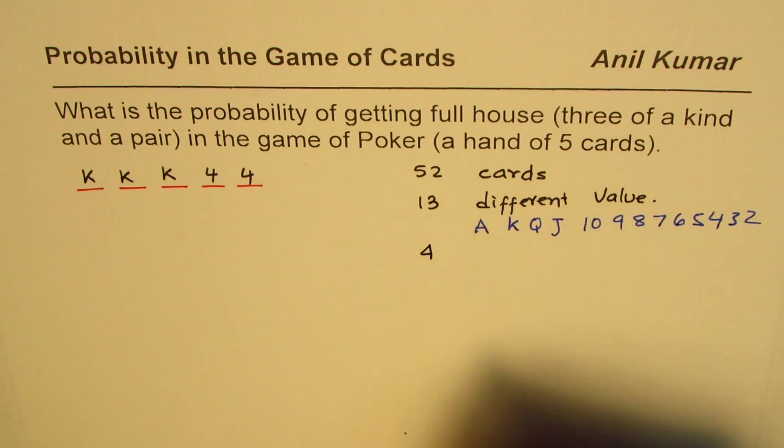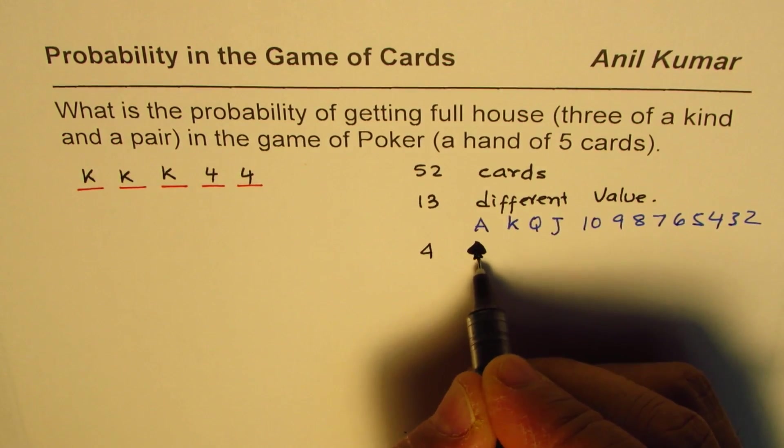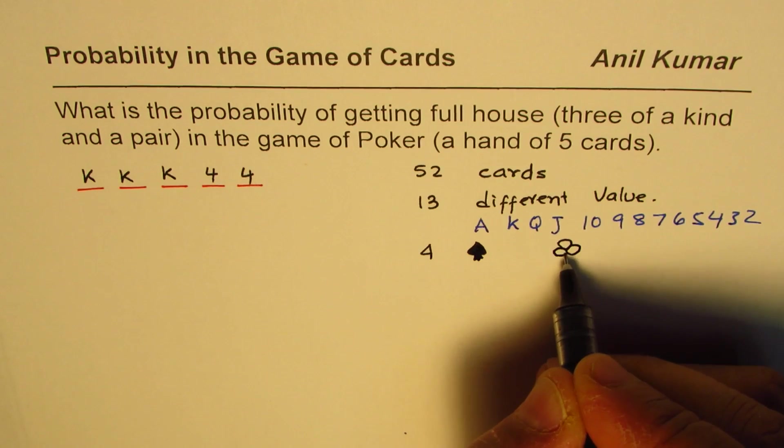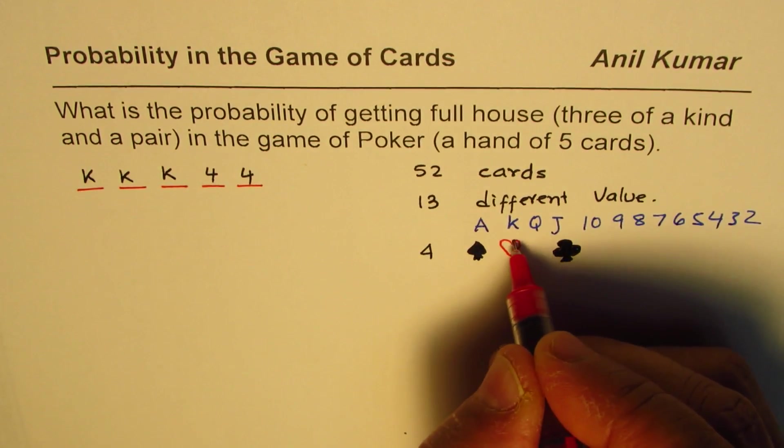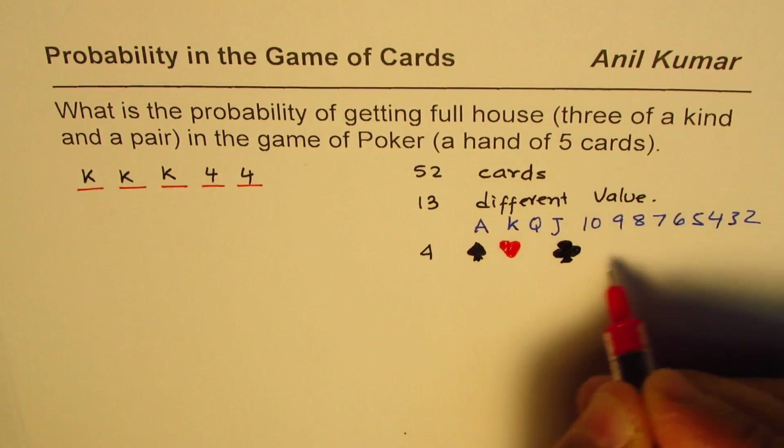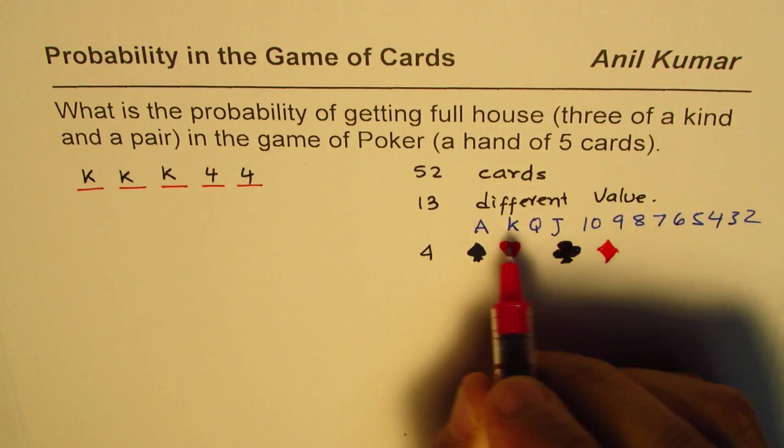So these are the 13 cards with different values and we also have four suits. Four suits are spades, clubs, these are the two black suits, and then we have two red which are hearts and diamonds.